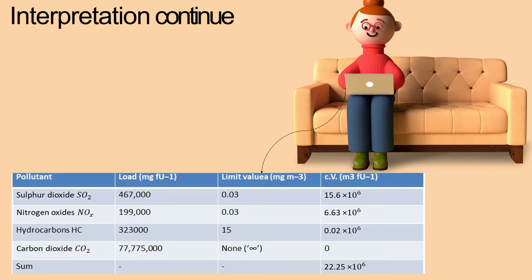Interpretation continued. Table 4.1: Critical volume air example. Pollutant load (mg FU⁻¹), limit value A (mg m⁻³), CV (m³ FU⁻¹). Sulfur dioxide SO2: load 467,000, limit value 0.03, critical volume 15.6 × 10⁶. Nitrogen oxides NOx: load 199,000, limit value 0.036, CV 63 × 10⁶. Hydrocarbons HC: load 323,000, limit value 15, CV 0.02 × 10⁶.